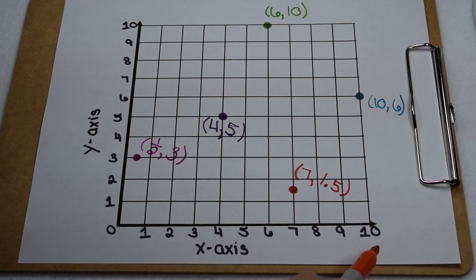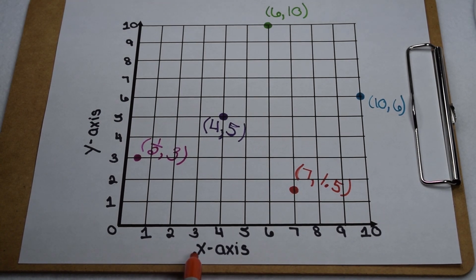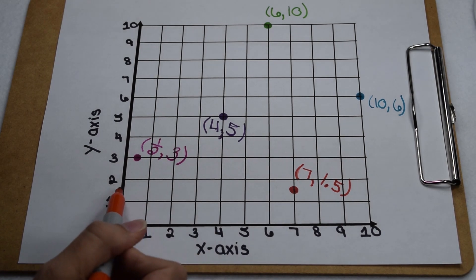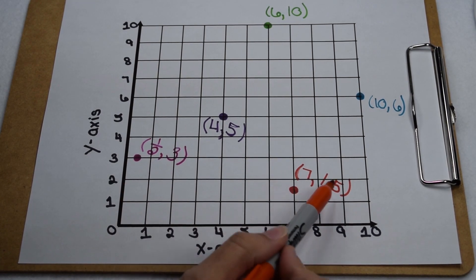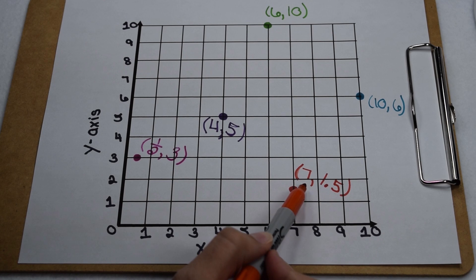When we're working with ordered pairs, it's always important to make sure we have them in the correct order. We start by determining the location on our x-axis, and then we determine its location on our y-axis. Remember, our ordered pair should always be inside a set of parentheses with a comma separating the x and y values.